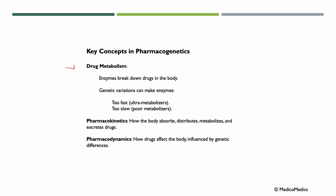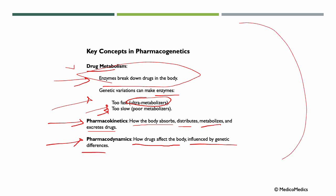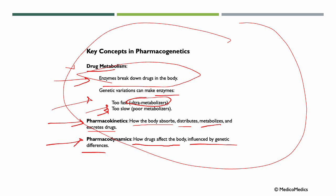Some key concepts are drug metabolism — enzymes break down drugs in the body. Genetic variations can make enzymes either too fast, so ultra-metabolizers, or too slow. Another concept is pharmacokinetics: how the body absorbs, distributes, metabolizes, and excretes drugs. Another one is pharmacodynamics: how drugs affect the body, influenced by genetic differences. Essentially, your genes affect how quickly or slowly your body processes medicines, and how well they work.